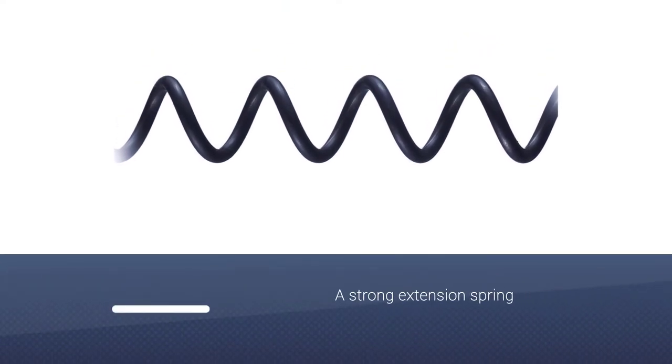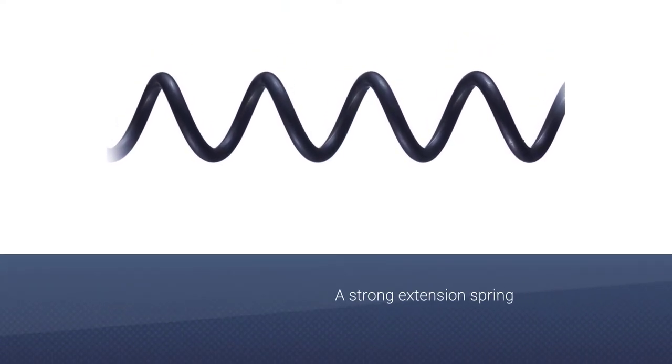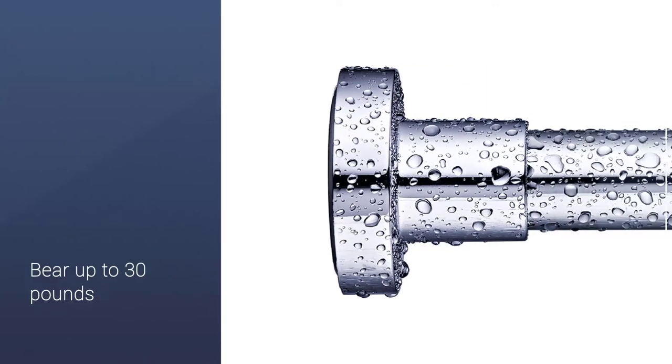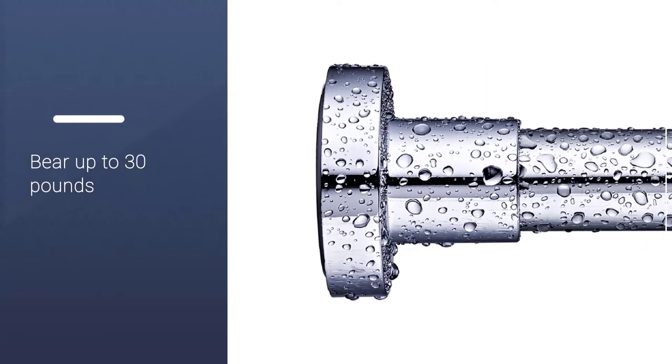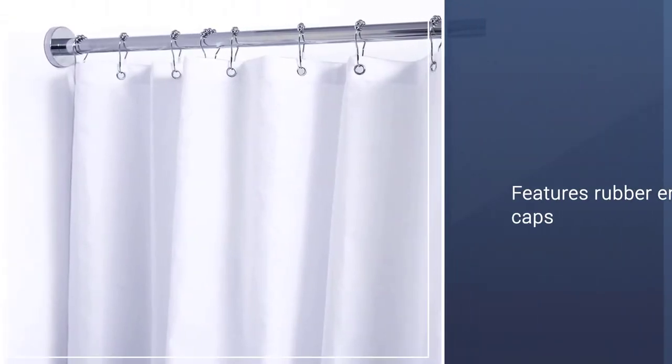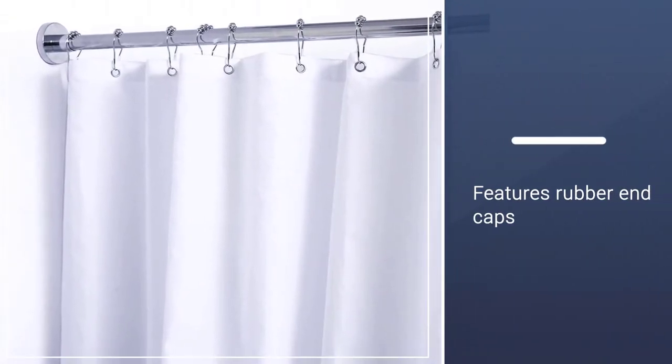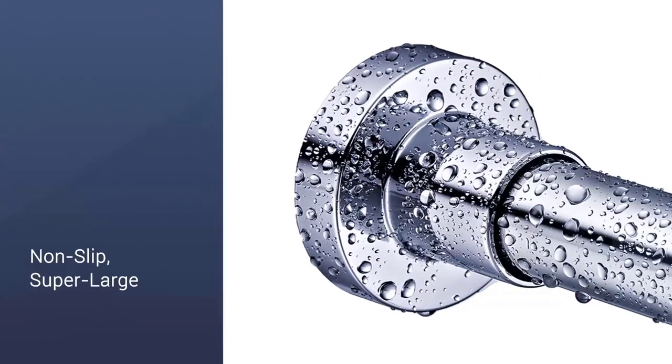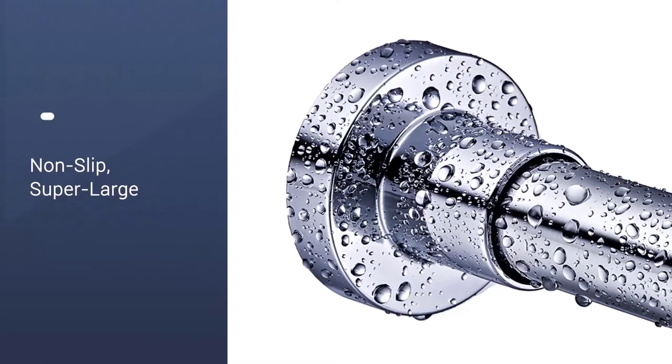No tools are necessary for installation. You only need opposing walls to fit the rod between. Twist the ends in opposite directions to lengthen or shorten the rod. The Bryofox Shower Curtain Rod features rubber end caps that won't slide on walls and won't leave scratches.